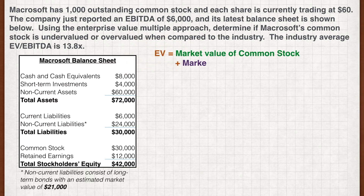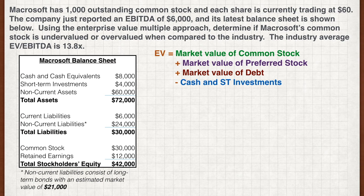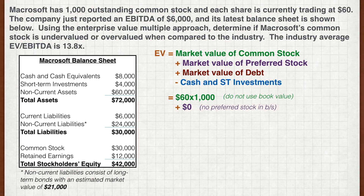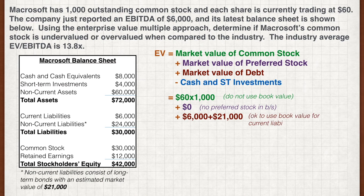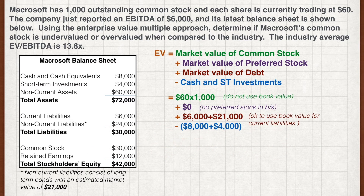Let's first recall our formula for enterprise value. The market value of common stock is the stock price multiplied by the number of shares outstanding. Do not use the book value of equity on the balance sheet. There's no mention of any preferred stock on the balance sheet, so the value is zero. Likewise for debt, do not use the book value. However, it is okay to use book value for current liabilities, as their market values tend to be very close to their book values as they are due soon. Cash and short-term liquid investments should be subtracted. Punch these figures into your calculator and you'll arrive at an enterprise value of $75,000 for the firm.